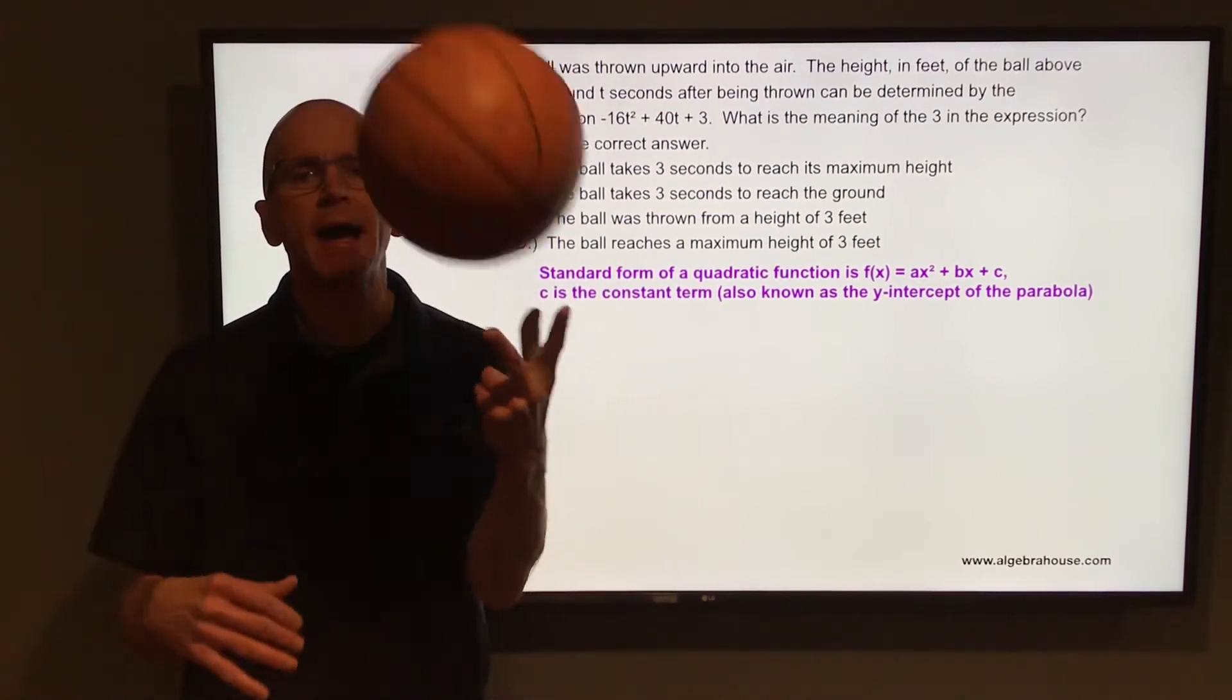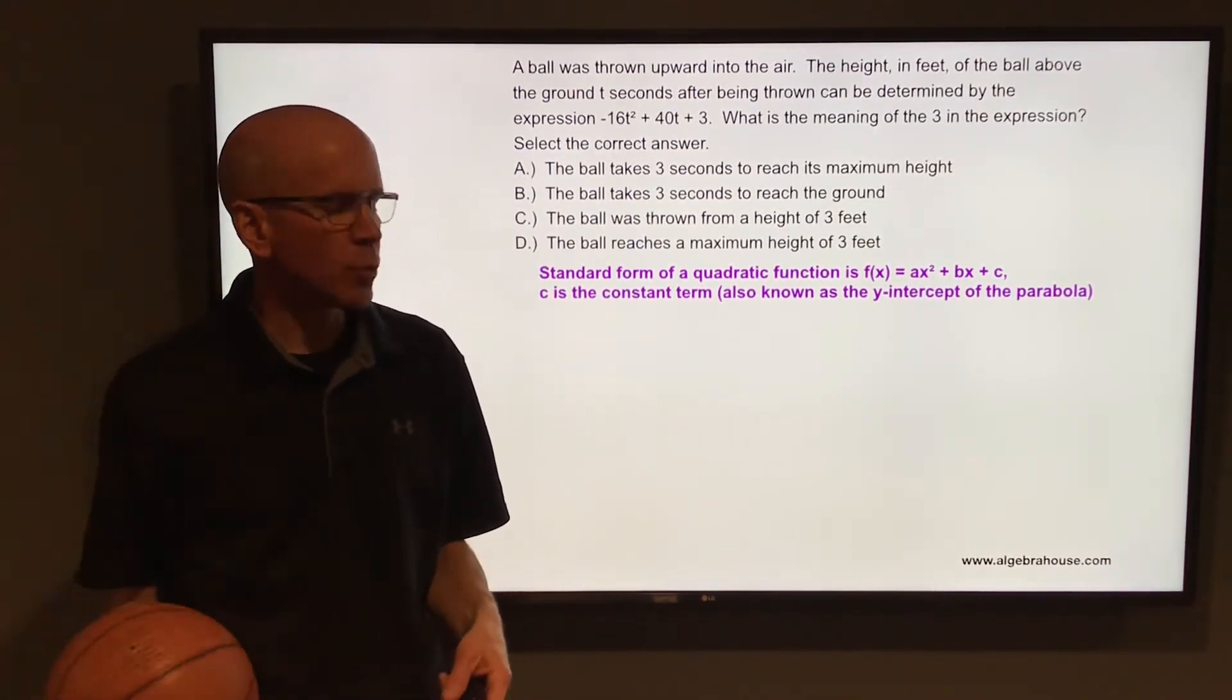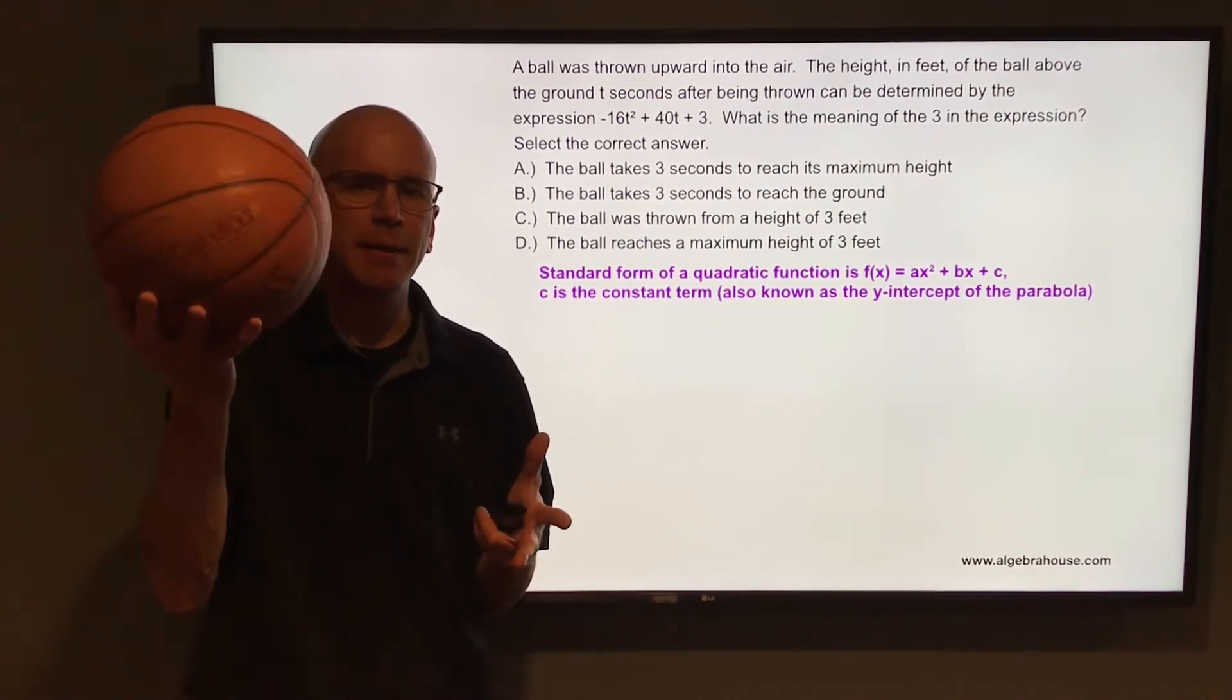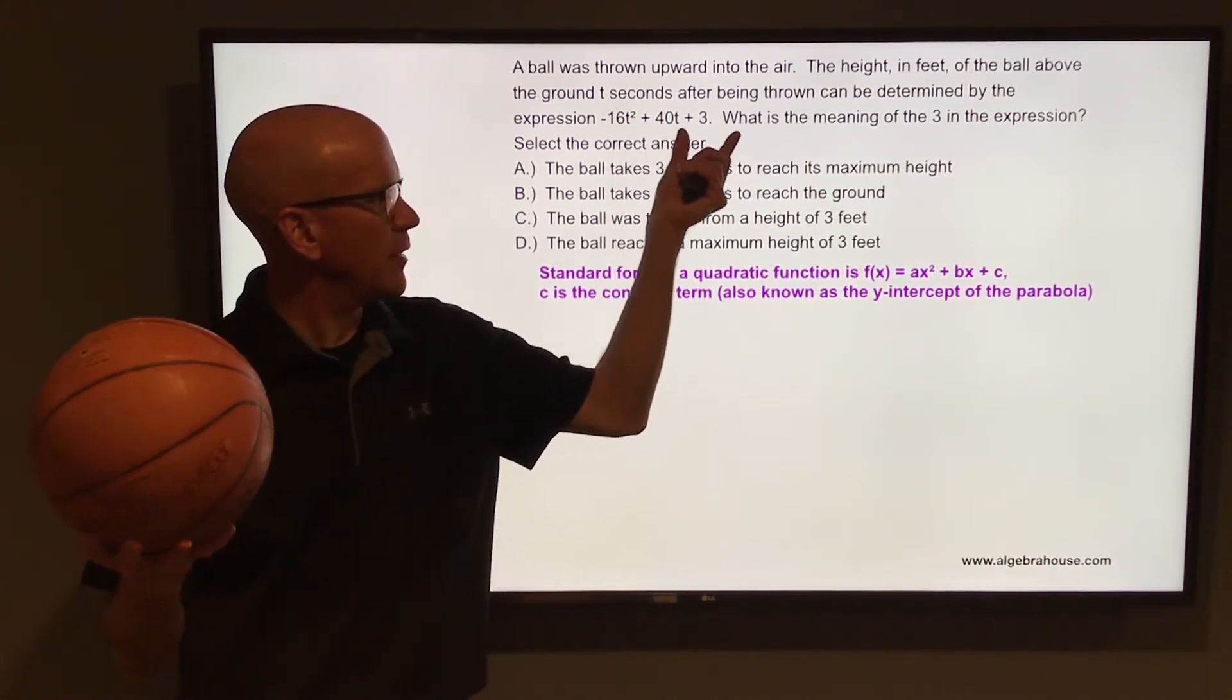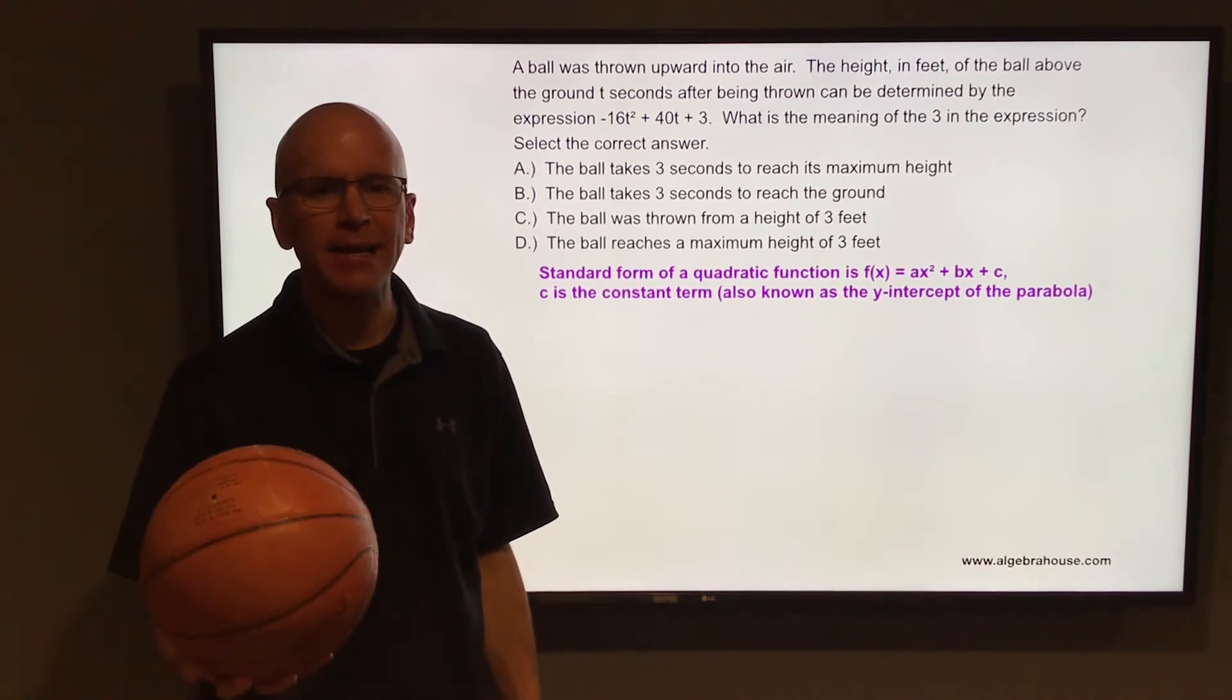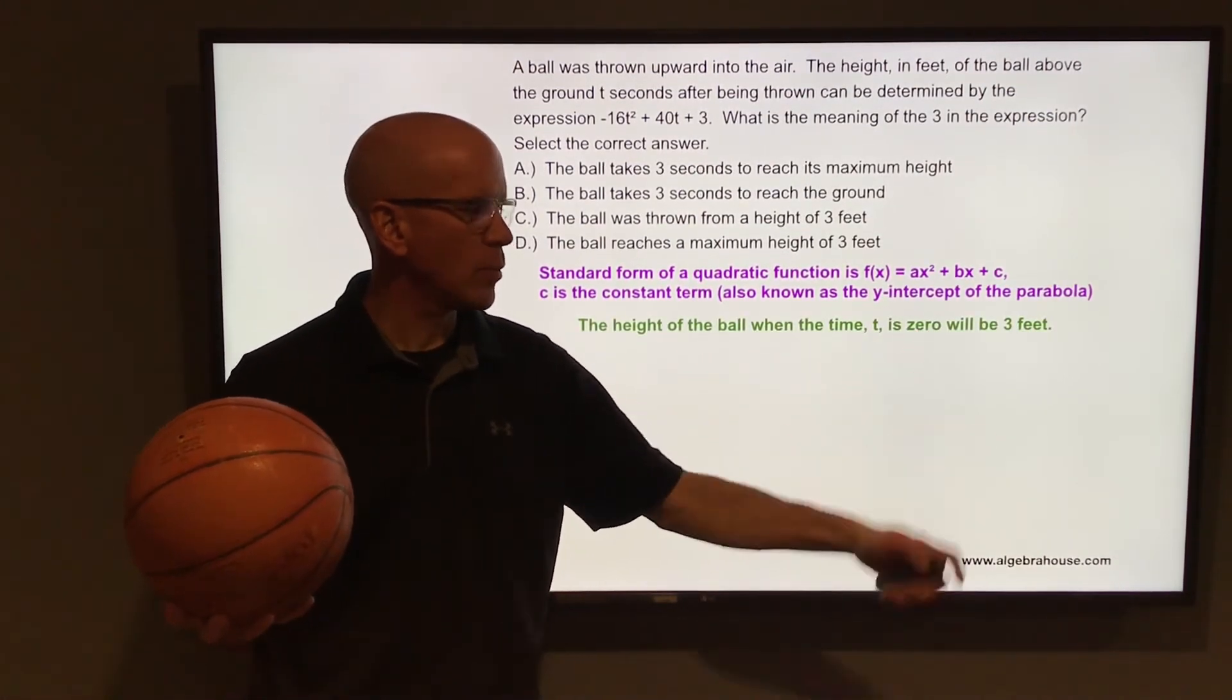It's going to take the flight or path of a parabola, a u-shaped graph. So right before you release that ball, the time is 0. And when you release that ball, that's when the time takes off. So if the time is 0 and the height is 3, that means you're releasing that ball from a height of 3 feet.